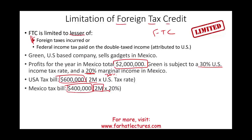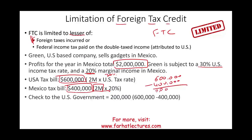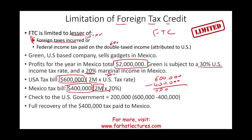So how much would Green end up paying in the US? The US tax bill is $600,000. Since Green paid $400,000 in Mexico, what's left is $200,000. Notice that Green Corporation recovered the full taxes paid in Mexico — because the $400,000 in foreign taxes paid is lesser than the $600,000 that would have been owed had that income been taxed solely in the US.